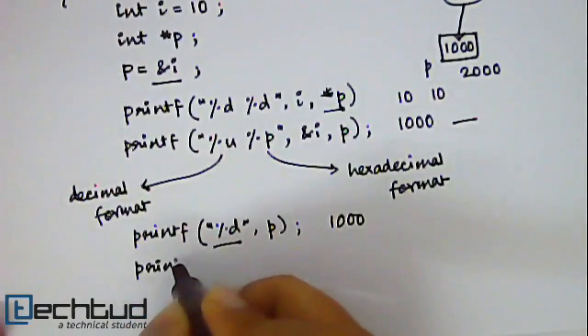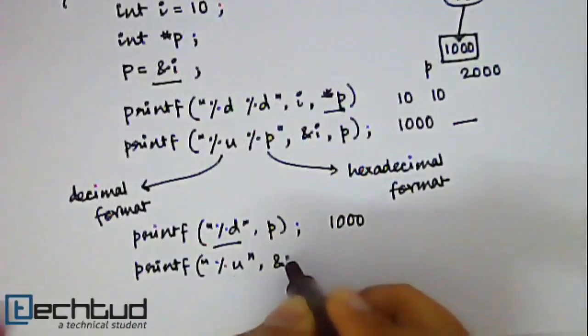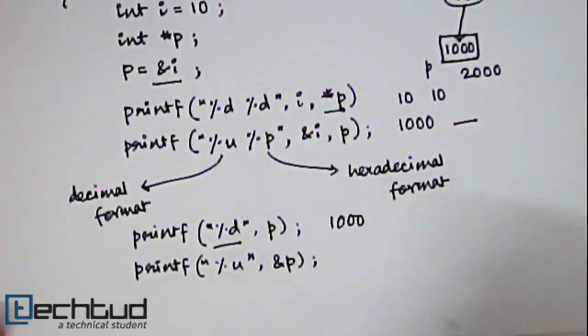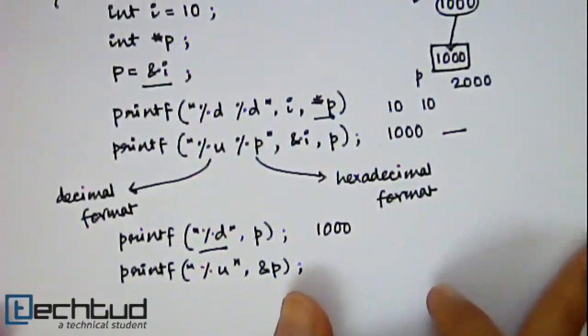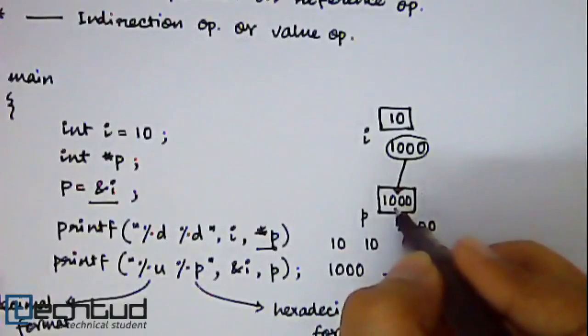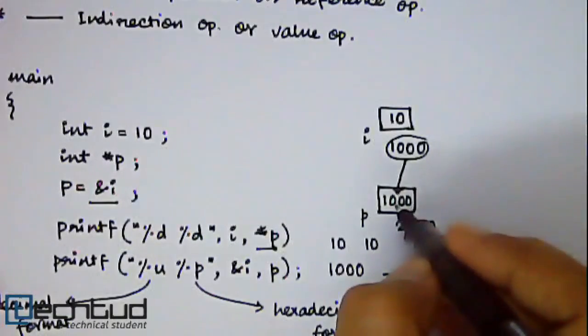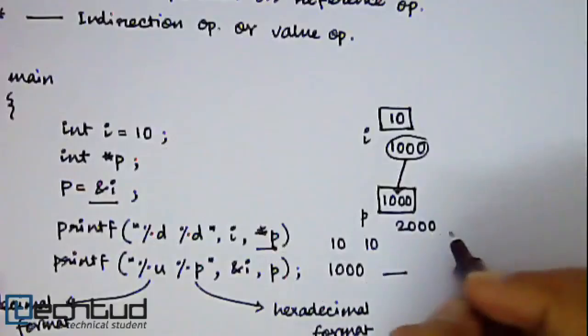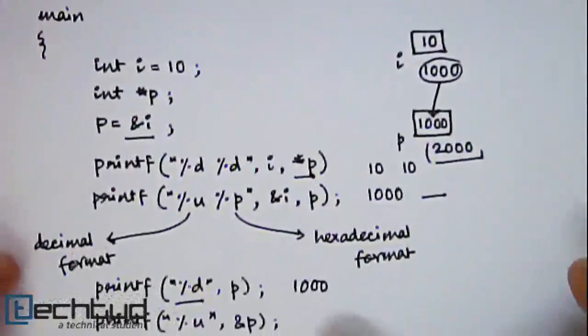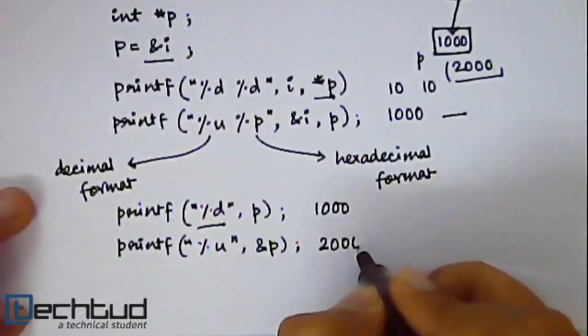Now if you write printf %u address of p. Then what will be printed? So what is the address of p here? The value stored inside the variable p is 1000. So while we are giving output p it gives us 1000. But the address of this variable p is what? This is 2000. So when we are trying to print the address of p it will give us 2000.